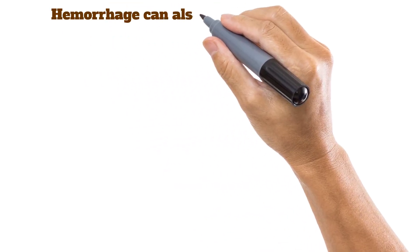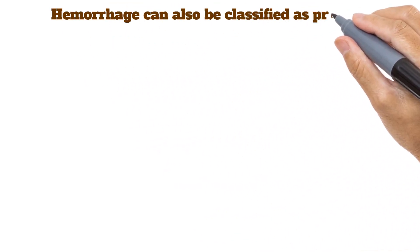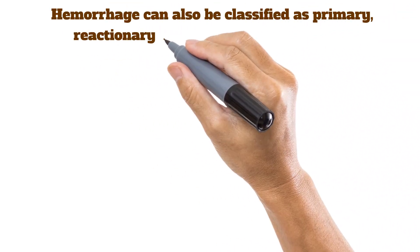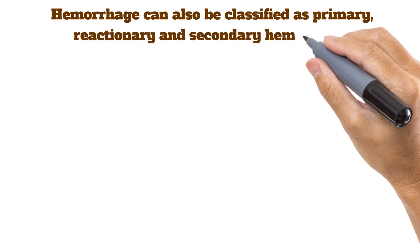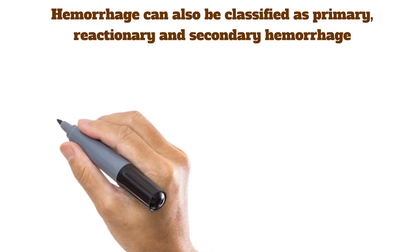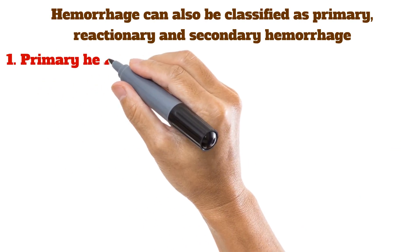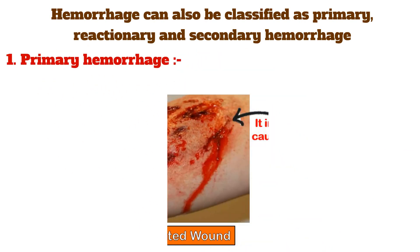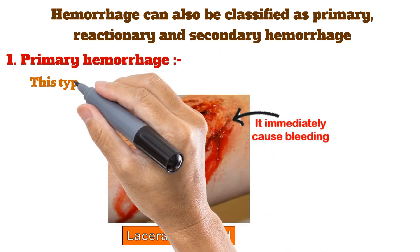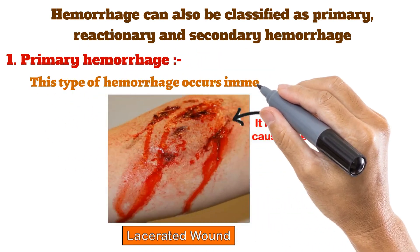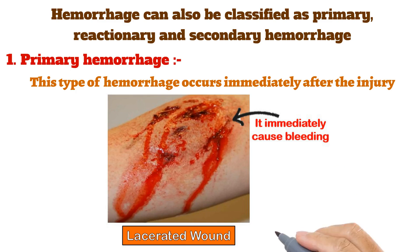Hemorrhage can also be classified as primary, reactionary, and secondary hemorrhage. The first is primary hemorrhage. This type of hemorrhage occurs immediately after the injury.